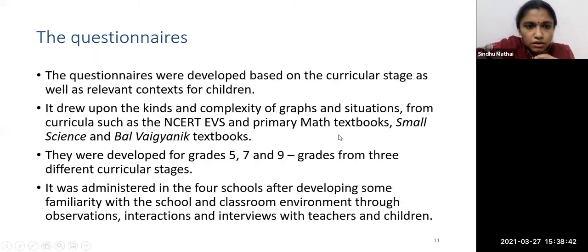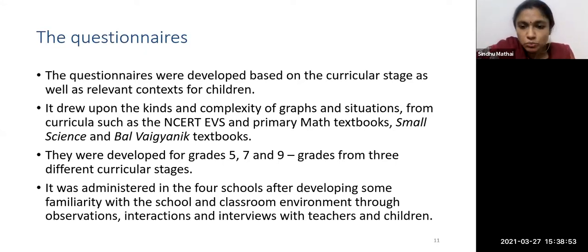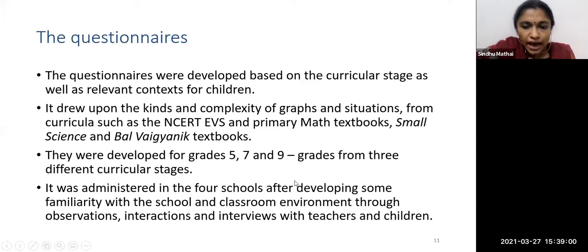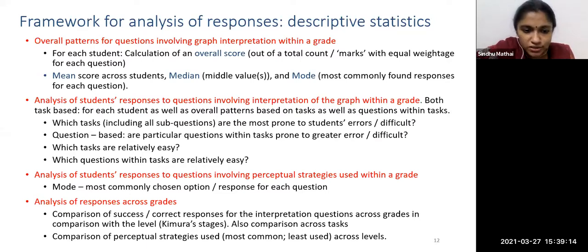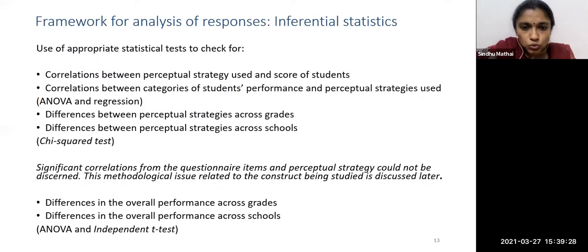School D is an alternative school with very small classes using multiple curriculum materials, but it's difficult to see trends because classes become even smaller as children move up to higher grades. The questionnaire was developed based on curricular stage, drawing from NCERT and primary math textbooks. Responses were analyzed descriptively to identify patterns, and also developmentally to compare children's responses across stages. Inferential statistics were used to check student performance across grades and across schools.